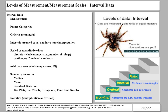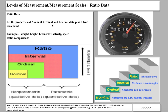The most informative scale is the ratio scale. It has all the properties of the nominal, ordinal, and interval scale, plus it has a true zero point. Examples are weight, height, brainwave activity, and speed. You can make ratio comparisons because there is a concept of zero speed. If someone is going 50 miles an hour and someone is going 100 miles an hour, you can say the person going 100 miles per hour is going twice as fast as the person going 50 miles per hour.